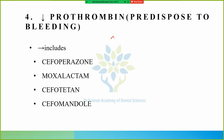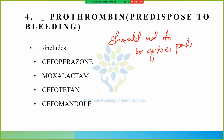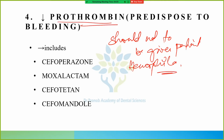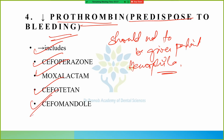The same drugs — cefoperazone, moxalactam, cefotetan, and cefamandole — should not be given to patients with hemophilia or bleeding tendencies, because they decrease prothrombin levels and predispose to bleeding. These four drugs must be remembered. This is very important.